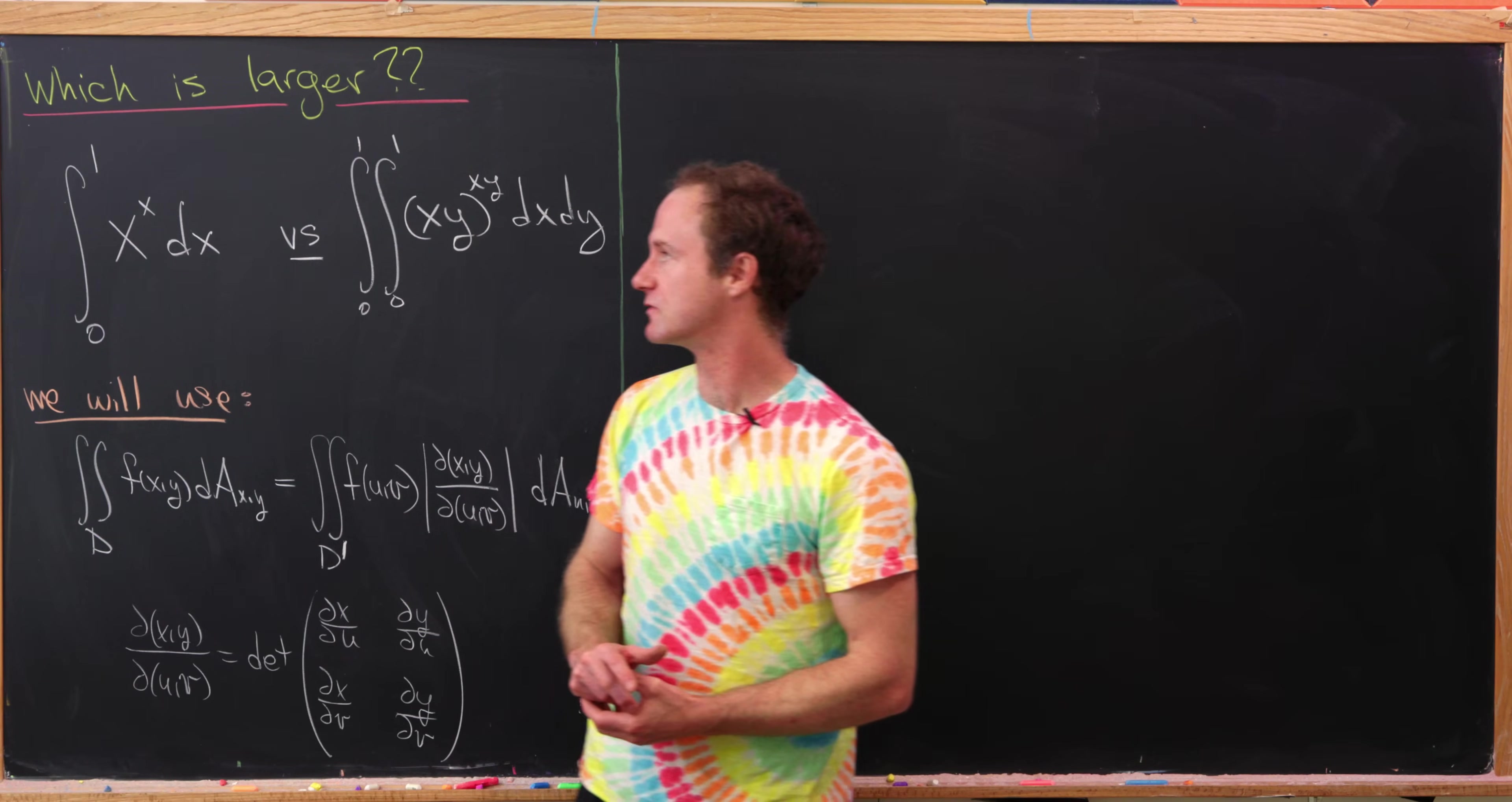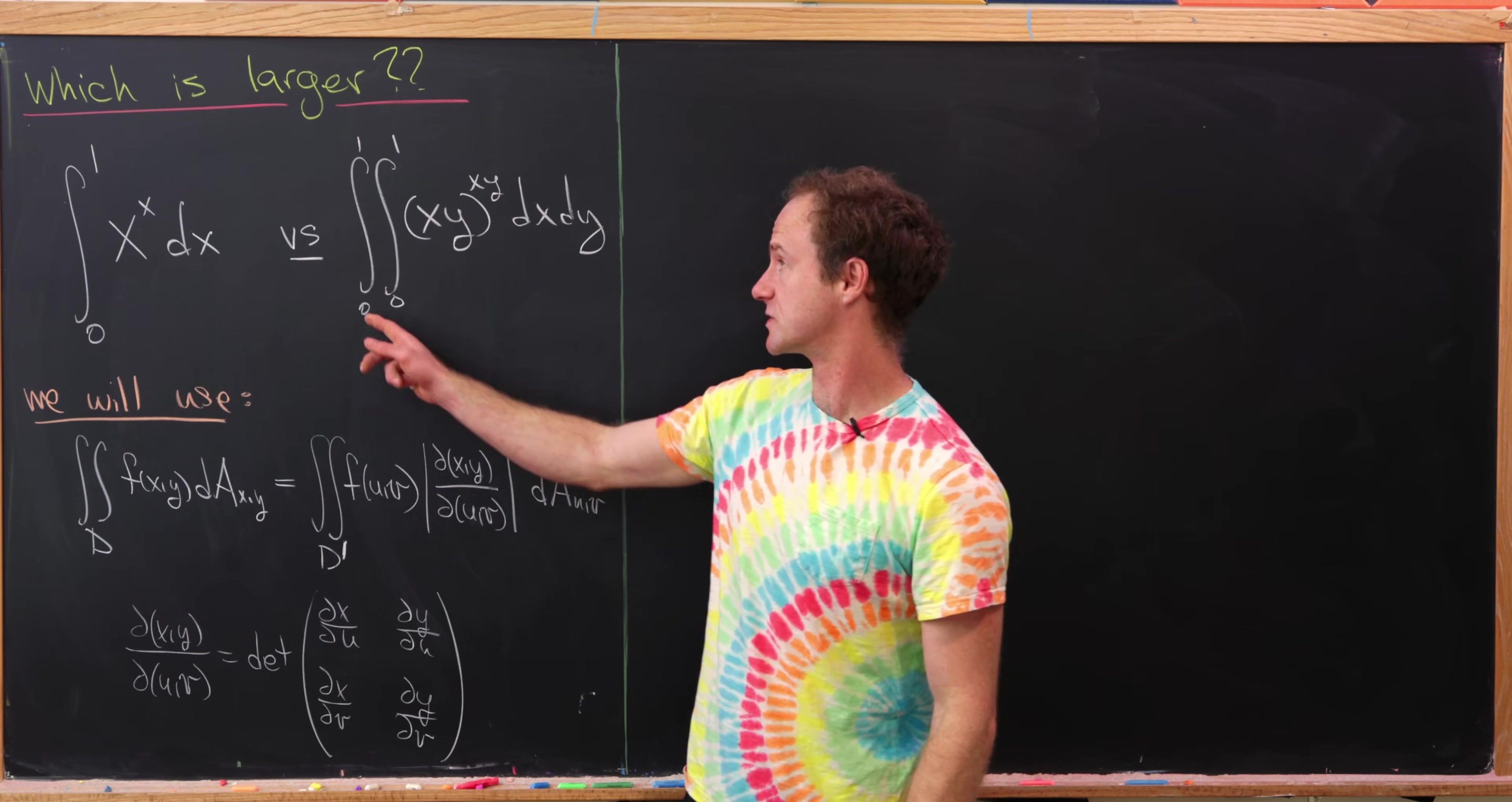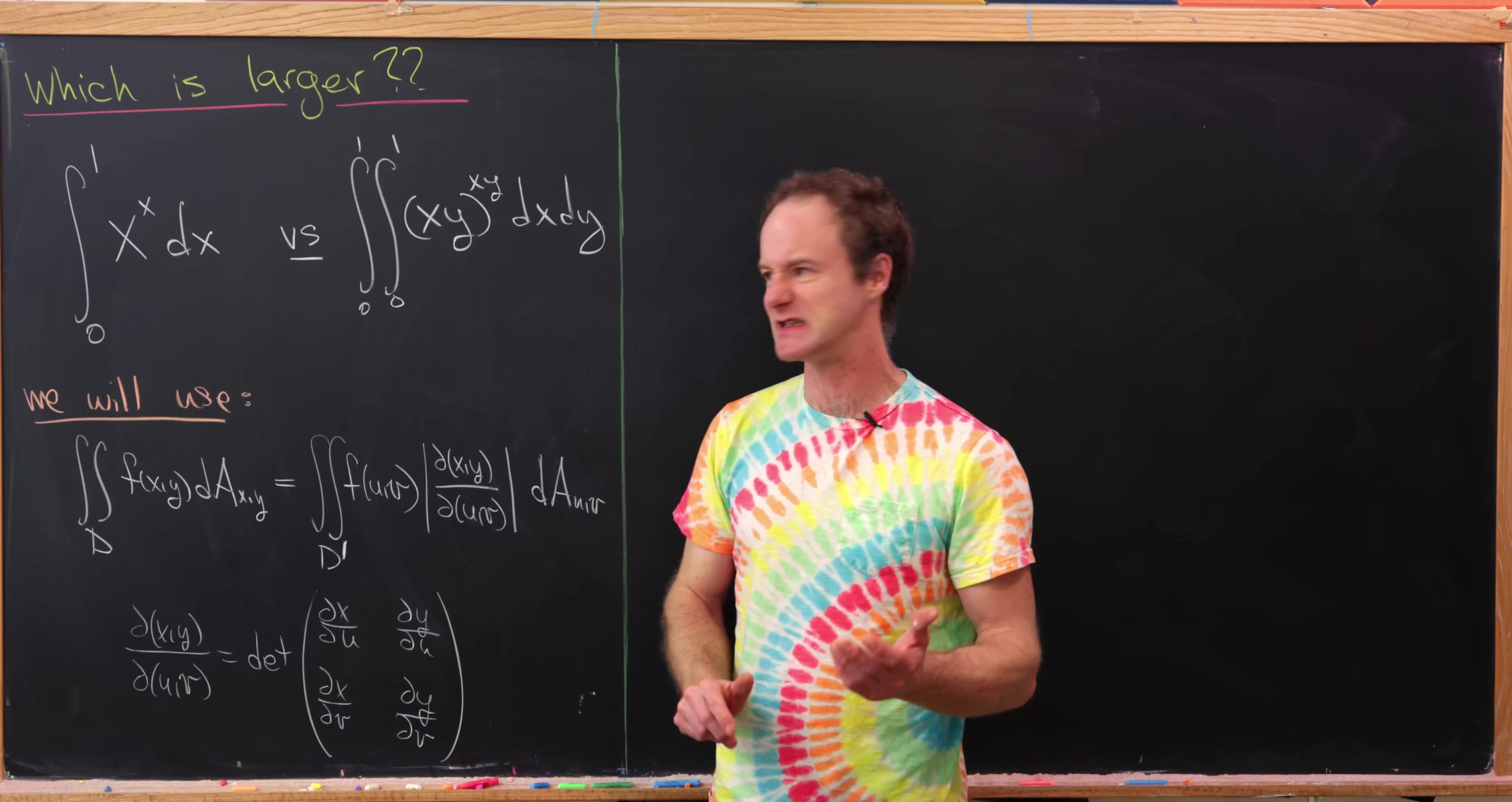So we've got the integral from 0 to 1 of x to the x dx, or the double integral from 0 to 1 and 0 to 1 of x times y to the power x times y dx dy.